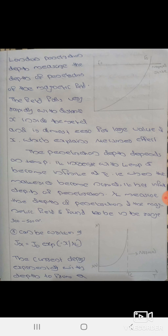The field falls very rapidly with distance x inside the metal, and it is almost zero for large values of x. This explains the Meissner effect. The magnetic field falls very rapidly with distance inside the superconductor.